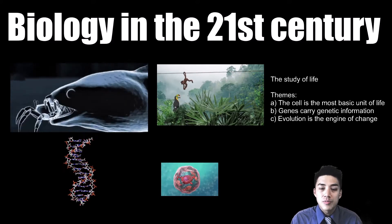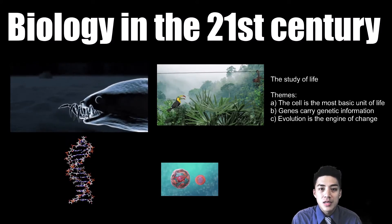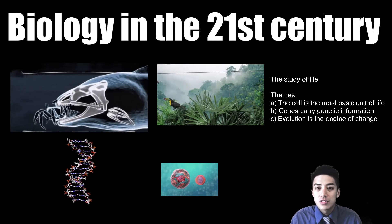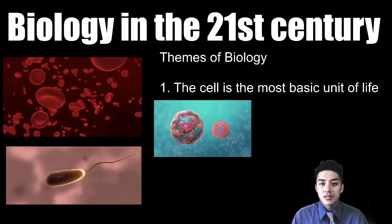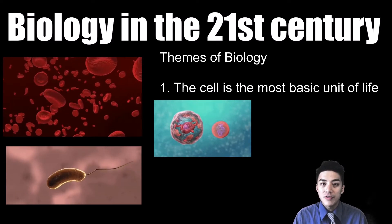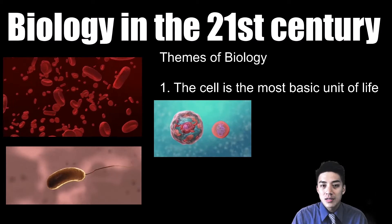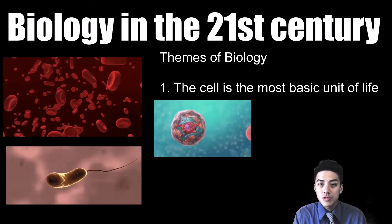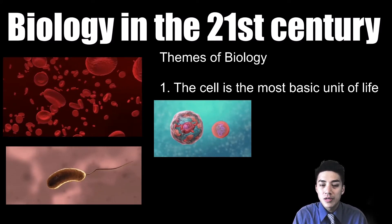But in any branch of biology, there are some unifying themes that help make it more coherent and easier to understand for the average student. The first theme of biology: the cell is the most basic unit of life. They're the building block to all living things. They have the biological parts that allow them to carry out functions in your body, and over time they can reproduce and allow the organism to grow and develop in their environment.